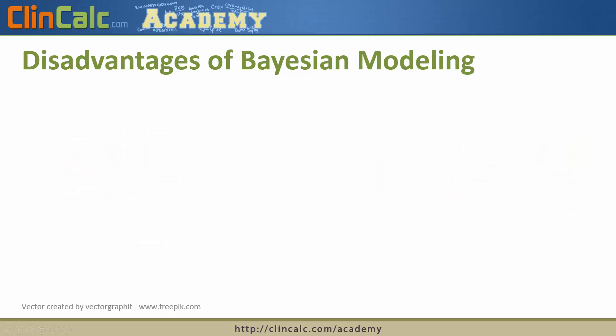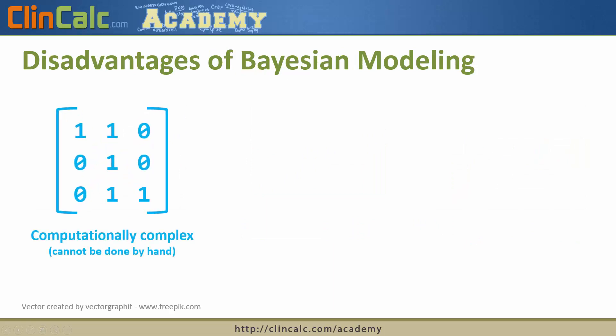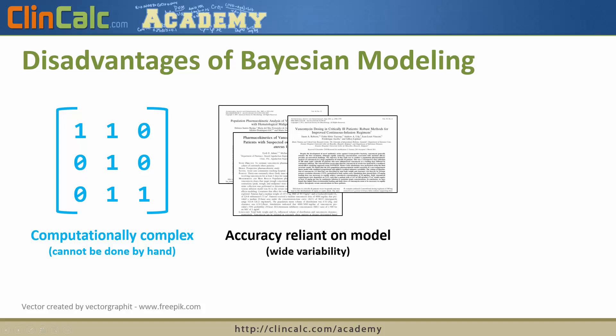There are some disadvantages of Bayesian modeling — it's not perfect. One is that it's computationally complex; there's no way you can do this by hand. The math involves matrices and a very long algorithmic approach to come up with the most optimal values for volume of distribution and vancomycin clearance. Probably the biggest disadvantage is that the accuracy is highly dependent on which model you initially decide to go with for your patient. If you pick the critically ill patient model but your patient is not critically ill, you'll be very far off.